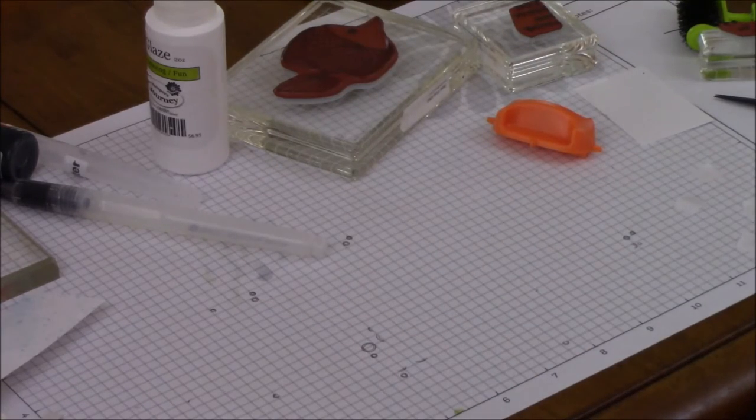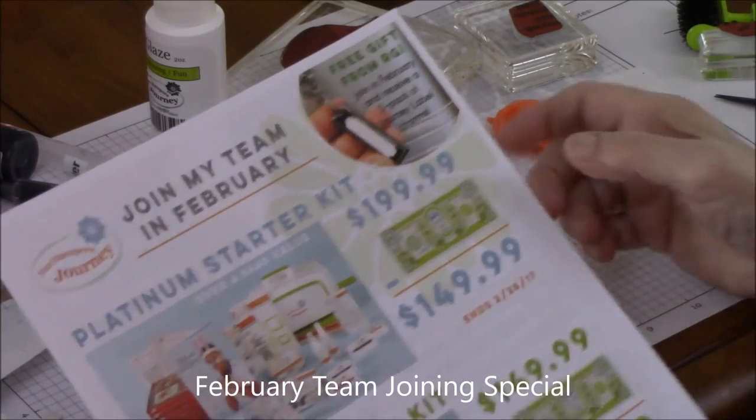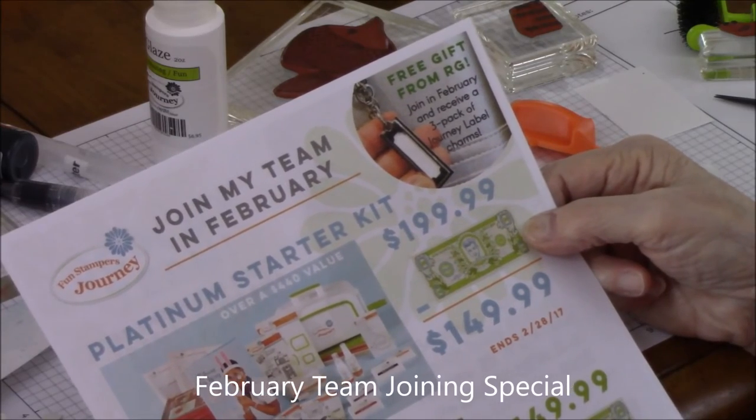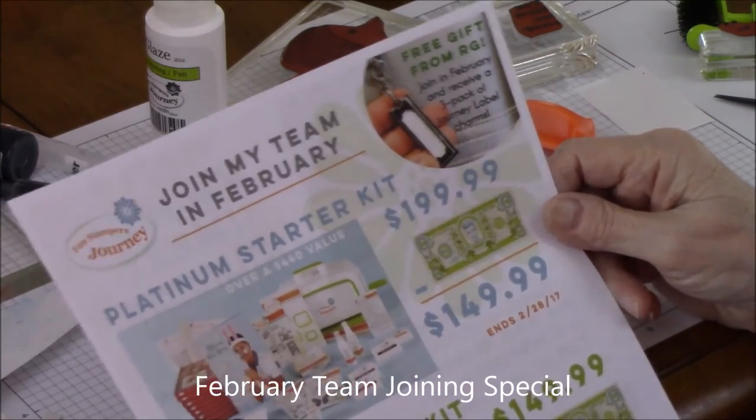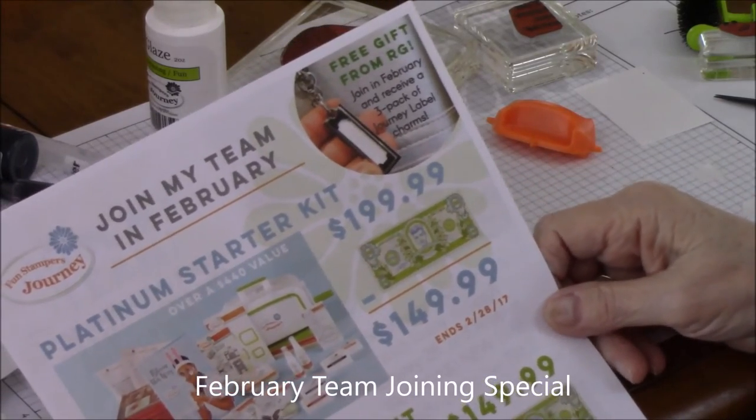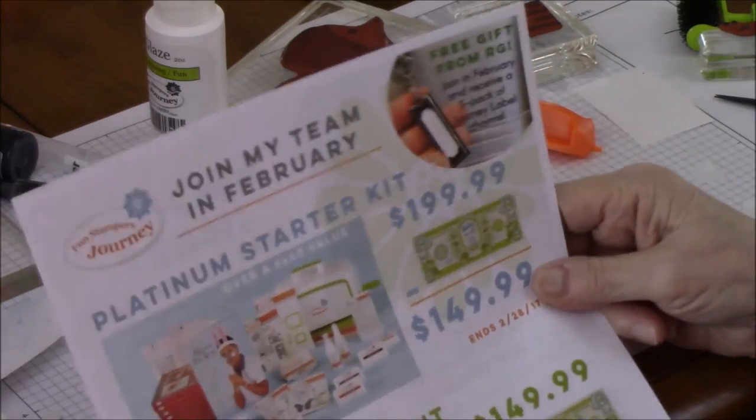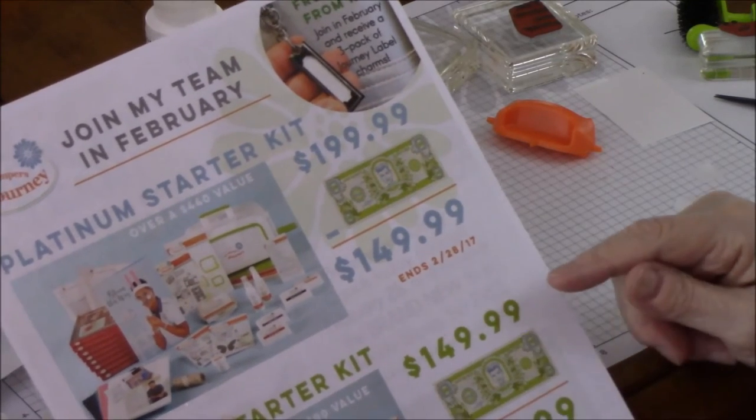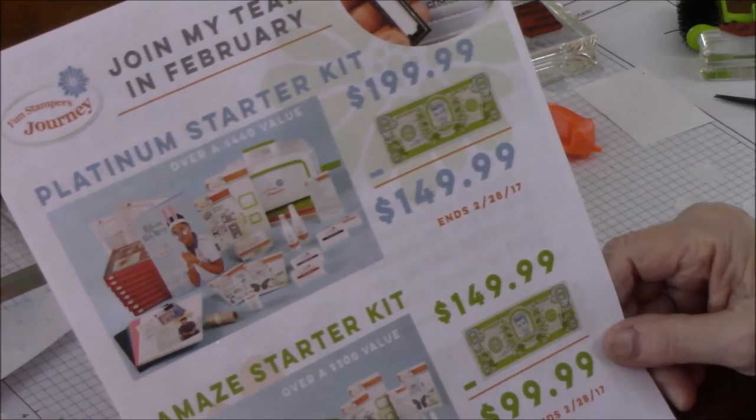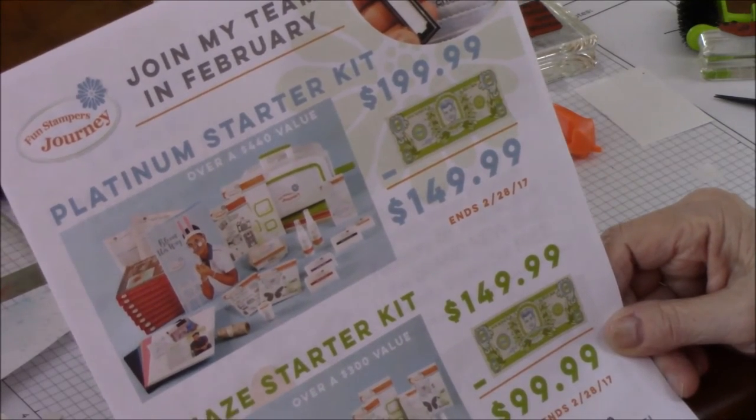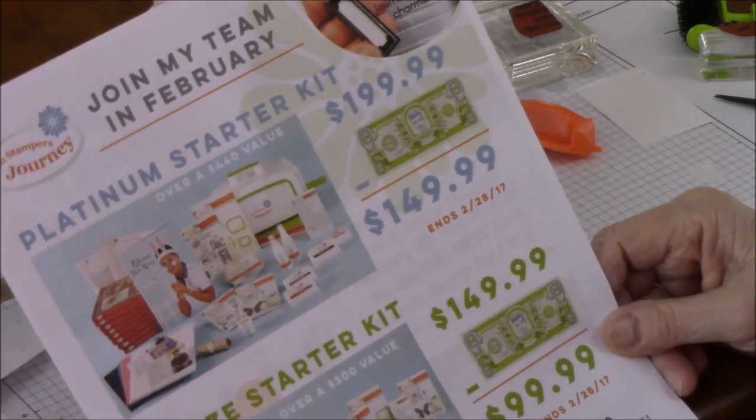One other thing that I want to show you all is the special going on right now with Fun Stampers. If you join my team from now to the end of February, you can get the code for taking $50 off of your starter kit. The starter kit platinum retails for $199.99. Its value is over $440. But with the $50 coupon code, you can get it for $149.99. The advantage of the platinum machine, it's our biggest machine, and it will use all of our steel ruled big dies as well as all the smaller dies. The Amaze starter kit normally sells for $149.99. Its value is over $300. It's a $50 off value, so you would get it for $99.99. This is the smaller die cut machine. It will cut our small dies, and it will cut our small steel ruled dies, but it will not cut the big steel ruled dies. So both of these kits are at an amazing offer right now.